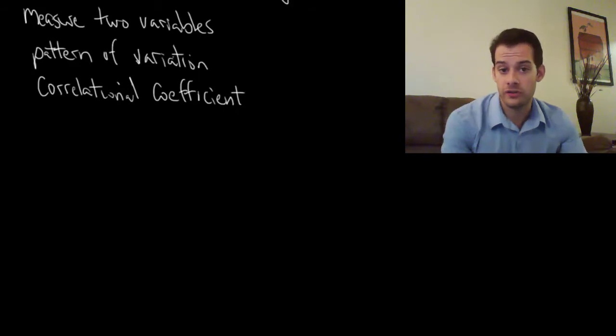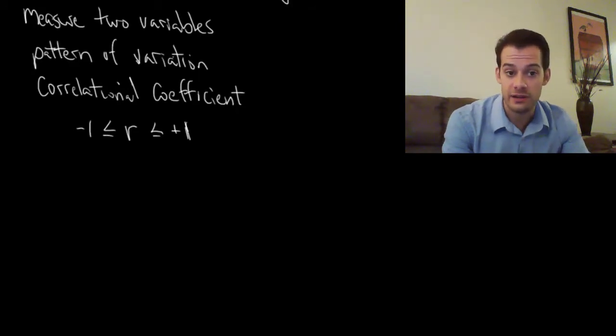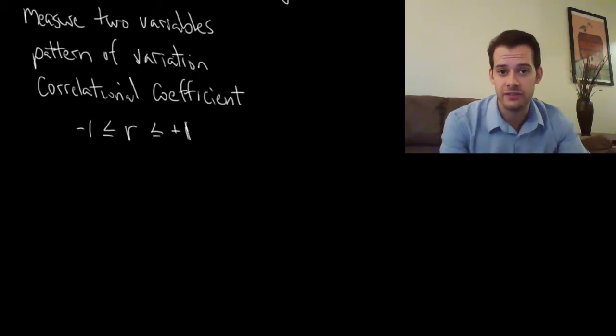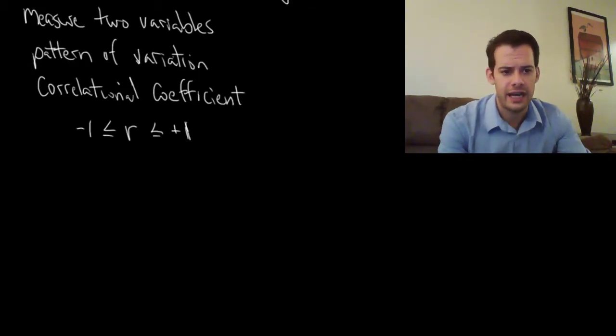So what is a correlational coefficient? A correlational coefficient is an r value. We represent this with a lowercase r. The r value can range from minus one all the way up to positive one. So it's going to be somewhere between these two extremes. This tells us the strength of the relationship. Whether it's positive tells us if it's a positive correlation that as one variable increases the other variable also increases. And in the case of a negative correlation as one variable increases the other variable decreases.